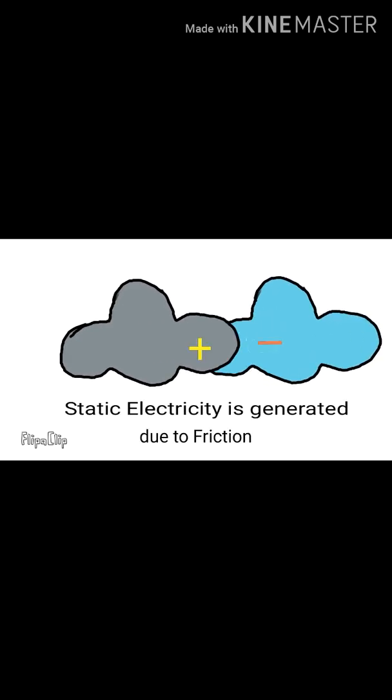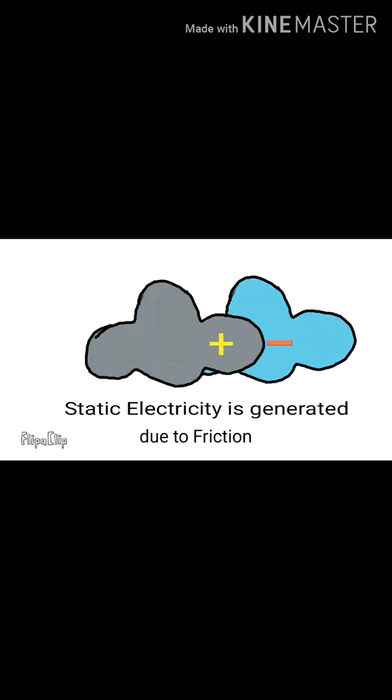When two clouds are getting rubbed with each other, static electricity is generated due to friction. One cloud becomes positively charged and another becomes negatively charged. The cosmic rays and UV rays also make the clouds charged.